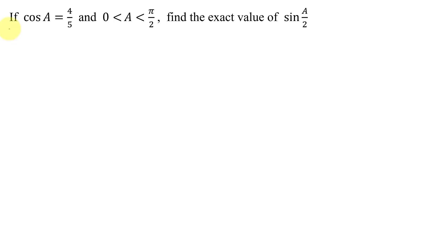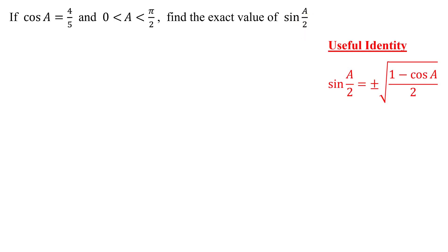This problem states: if the cosine of angle A equals 4 fifths and the measure of angle A lies between 0 and pi over 2, find the exact value of the sine of A over 2. Since I need to find the sine of A divided by 2, I'm going to need a half angle identity. Here it is: the sine of A over 2 equals plus or minus the square root of 1 minus cosine A, all divided by 2.